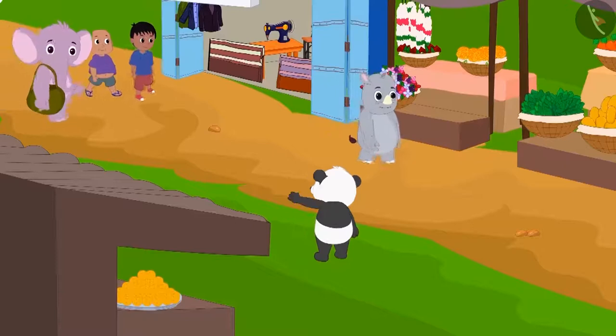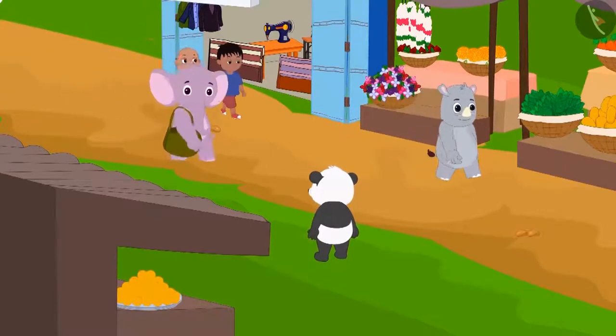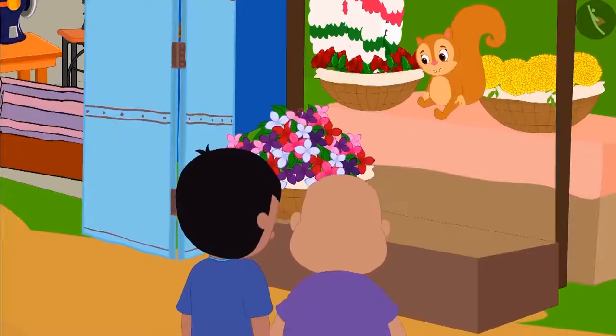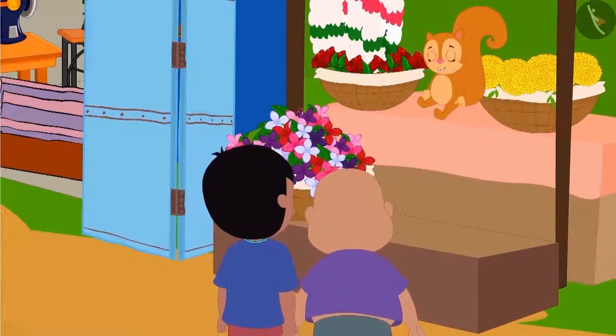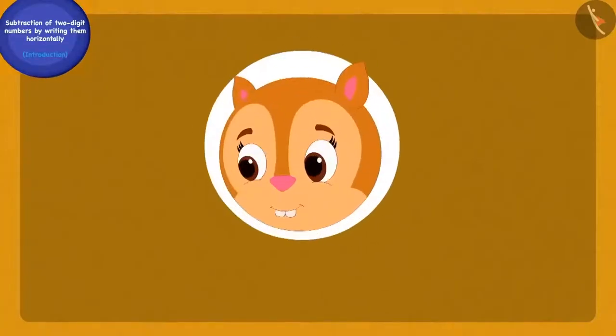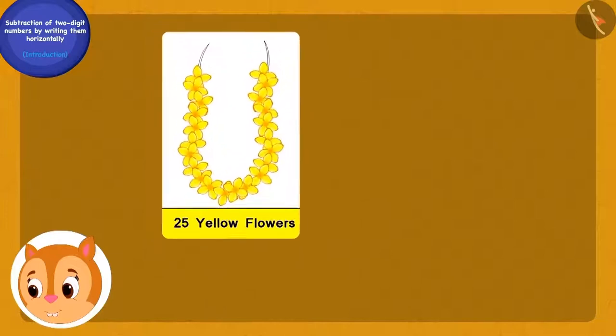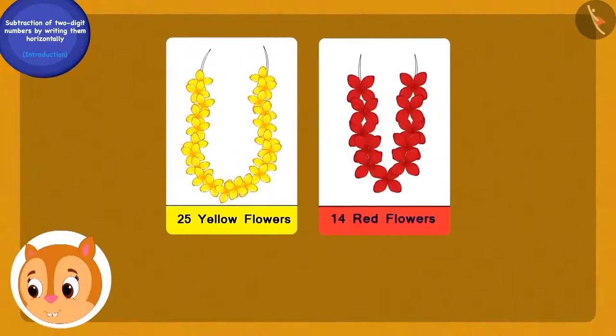One day, Raju and Bablu went to Chanda's flower shop. One garland of Chanda had 25 yellow flowers and the other garland had 14 red flowers.